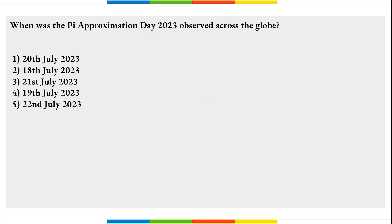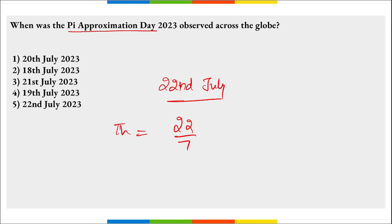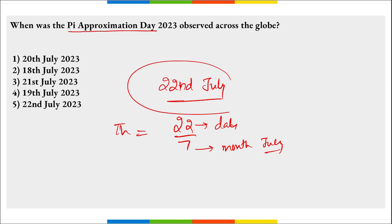When was Pi Approximation Day observed? On 22nd of July — because Pi is 22/7, where 22 is the date and 7 is the month of July. Pi Approximation Day is observed on 22nd July. Pi is also approximately 3.14.